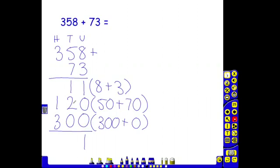One ten add two tens are three tens. One hundred add three hundred is 400. So our answer is 431.